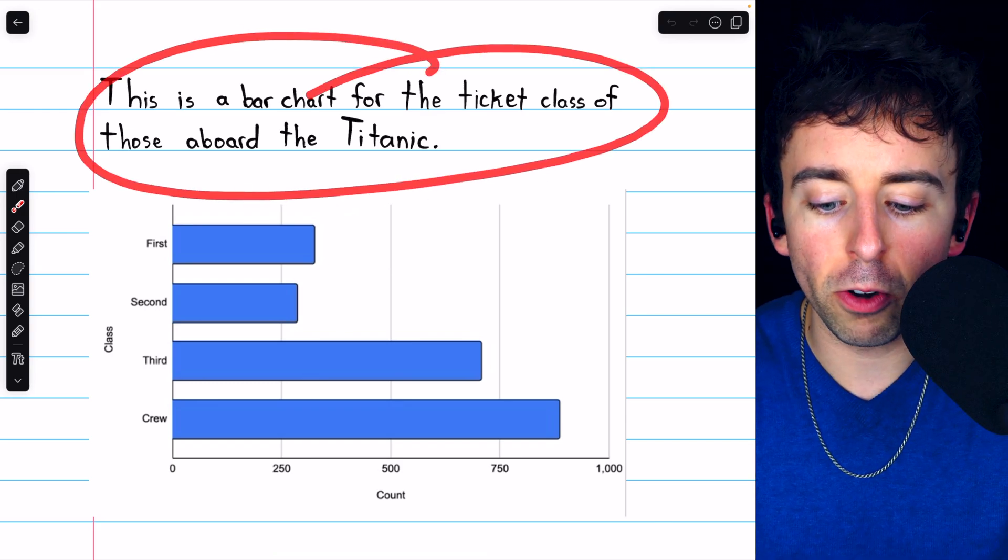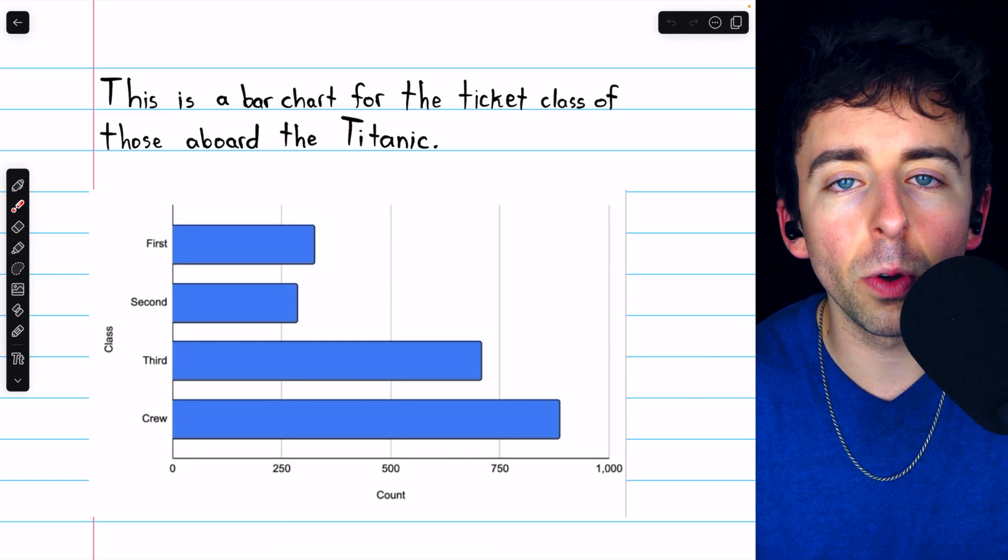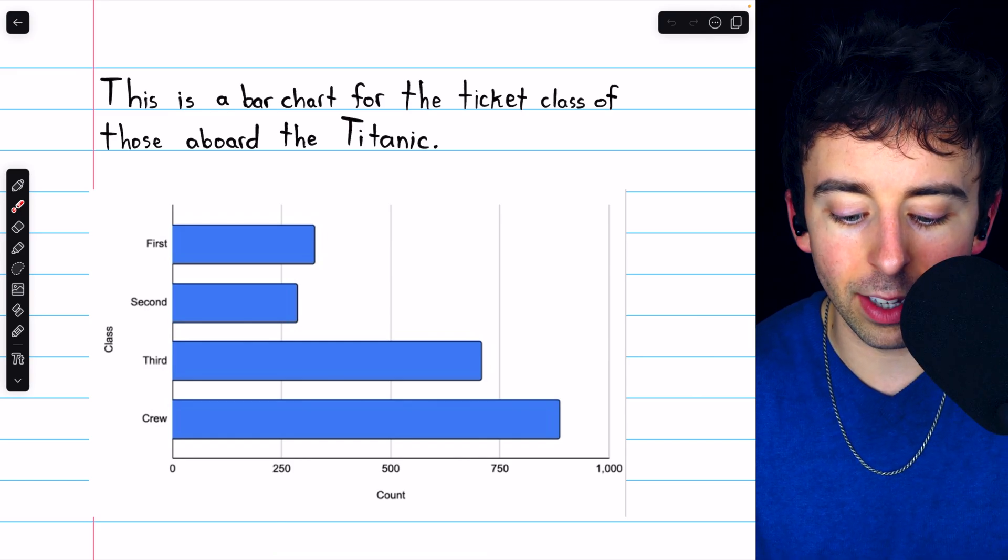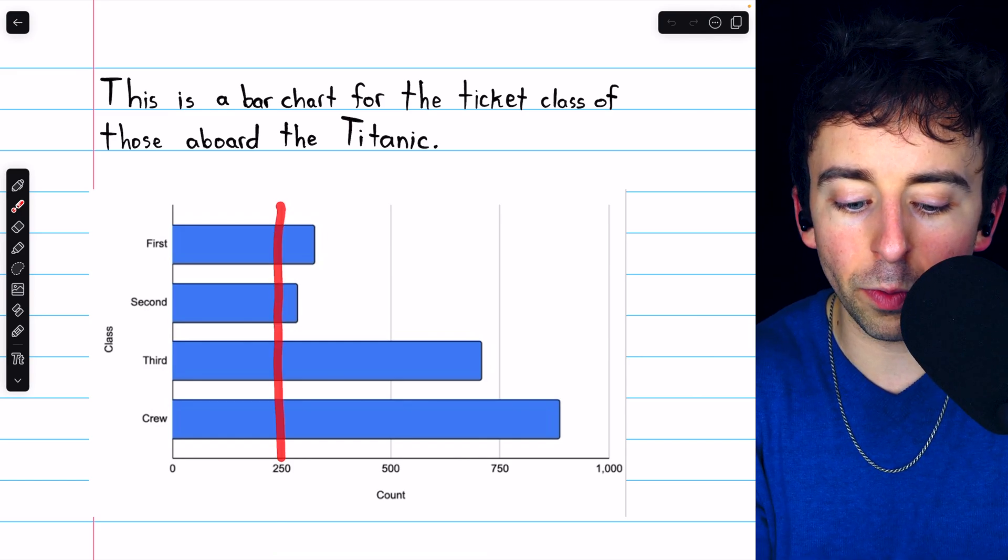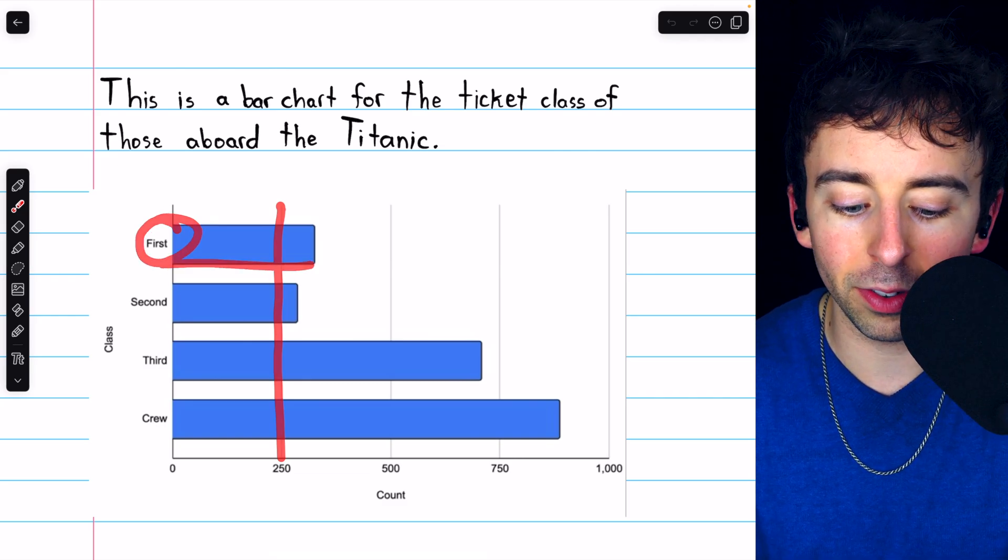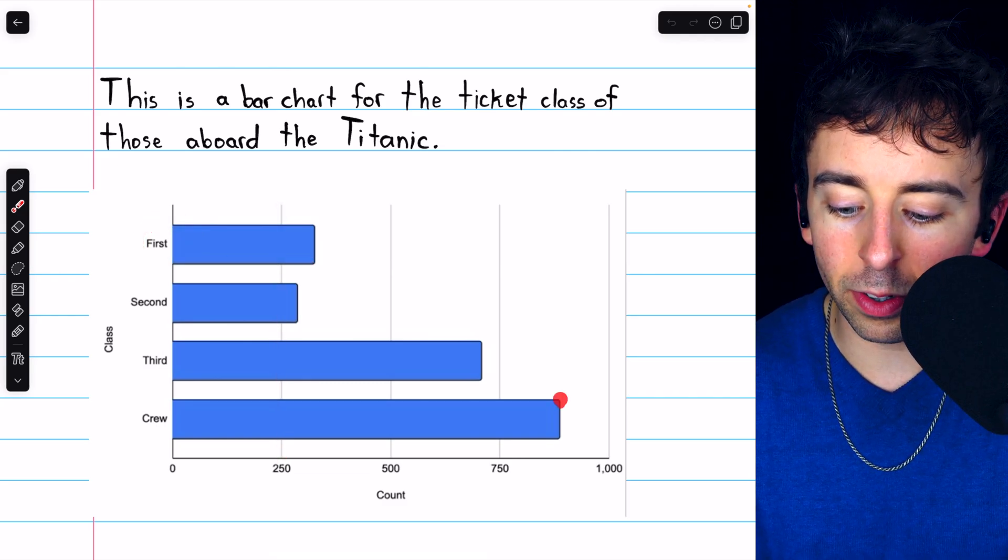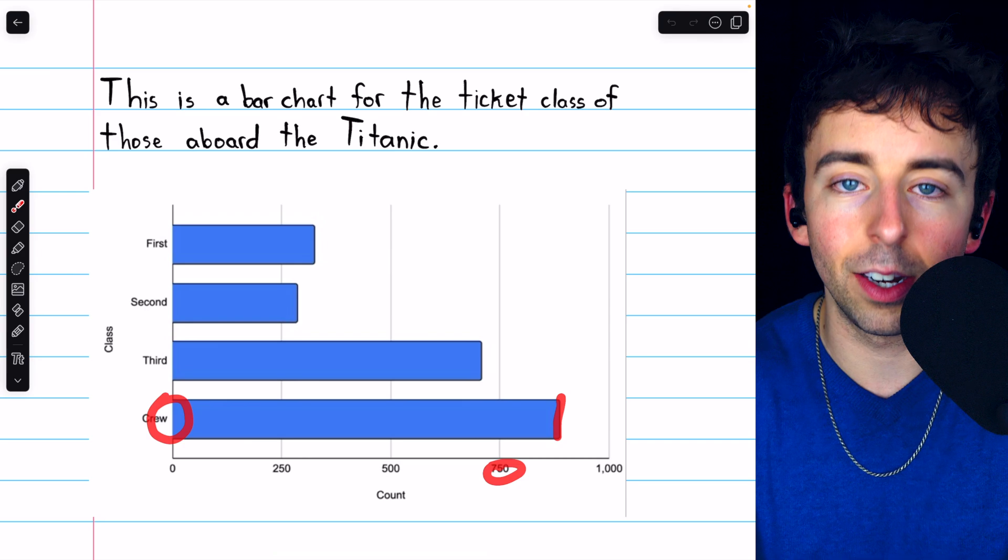So here is a straightforward bar chart for the ticket class of those aboard the Titanic. We can see, for example, a bit over 250 people on the Titanic were first class and well over 750 people were in the crew.